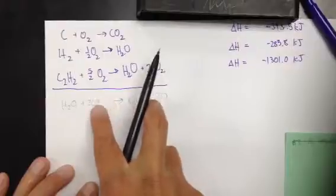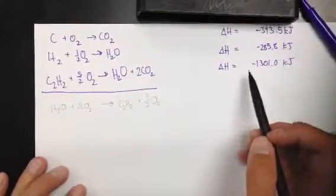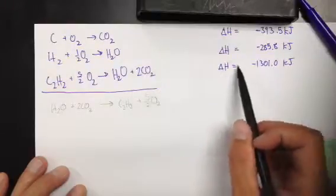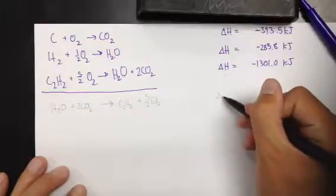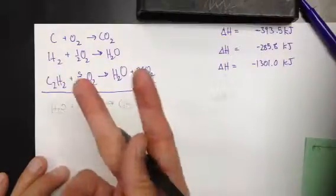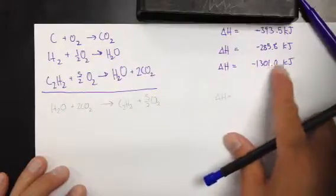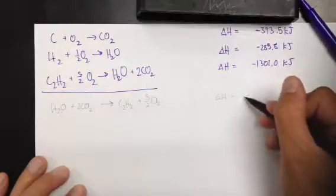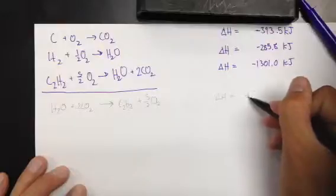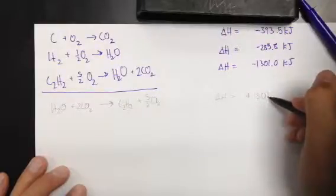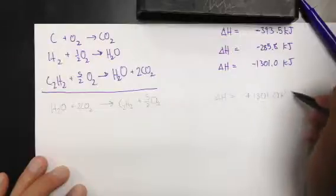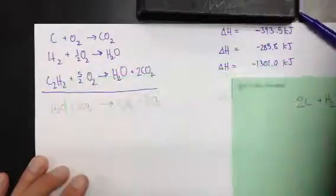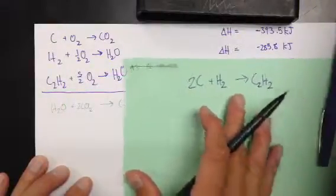I'm going to flip these guys first. H2O is now going to go on the left side, and this 2CO2 is going to go on the left side as well. Then my products are going to go over here - I'm going to have C2H2 plus 5 halves O2. And there's a consequence for doing that. Because I'm switching these guys over, the energy that's associated with this reaction will have to change as well. Since you flipped it, that sign is going to change. It's no longer negative, it's going to be now positive 1301.0 kilojoules. That's how I'd first attack it.